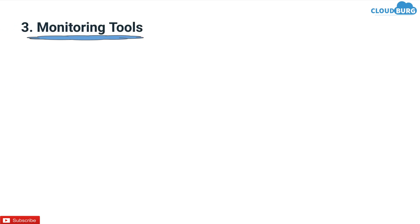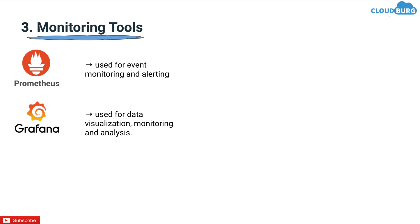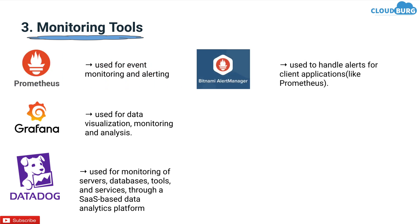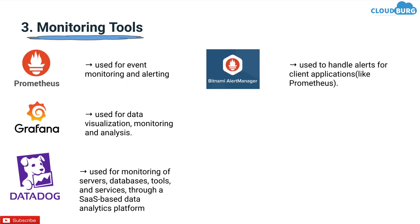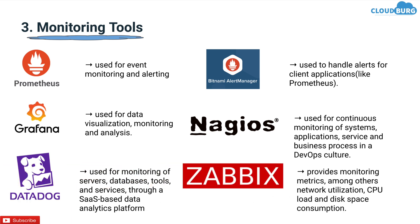Next under the category is monitoring tools, and we have Prometheus, which is used for event monitoring and alerting. Grafana is used for data visualization, monitoring and analysis. Datadog is used for monitoring of servers, databases, tools and services through a SaaS-based data analytics platform. Alert Manager is used to handle alerts from client applications, just like Prometheus. Nagios is used for continuous monitoring of systems, applications, services and business processes in a DevOps culture. Zabbix provides monitoring metrics including network utilization, CPU load and disk space consumption. The top demanding monitoring tools are Prometheus and Nagios.